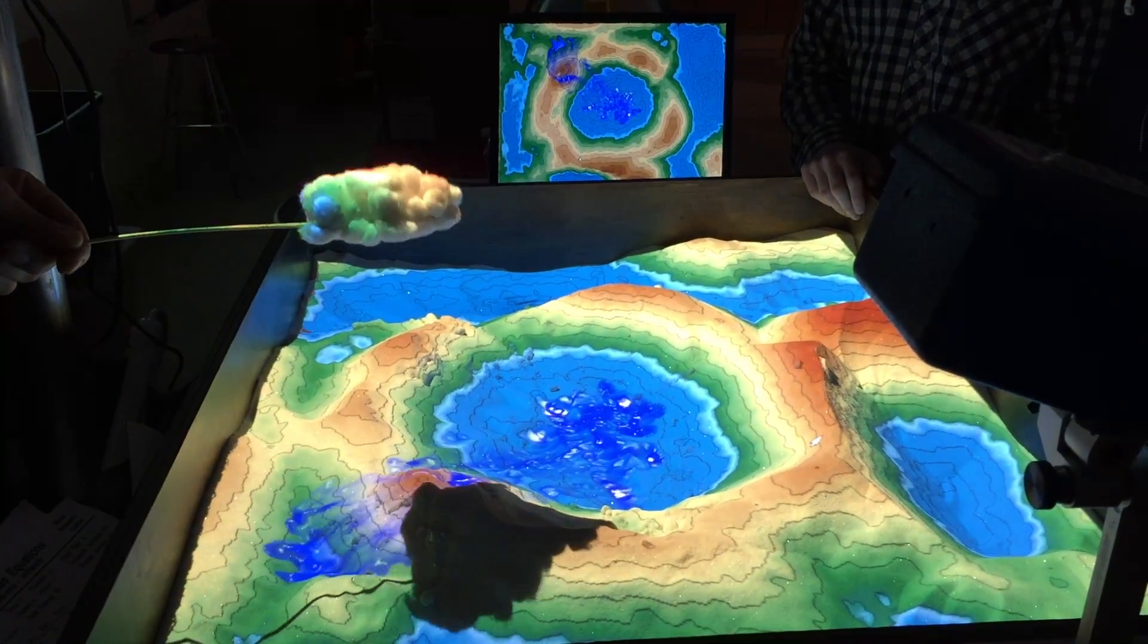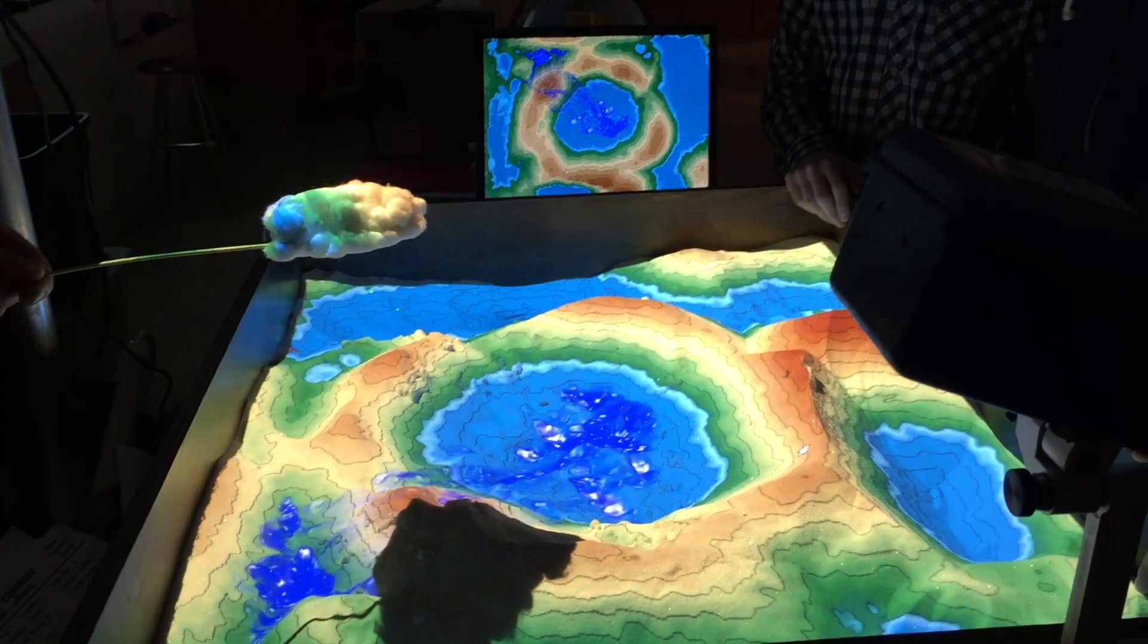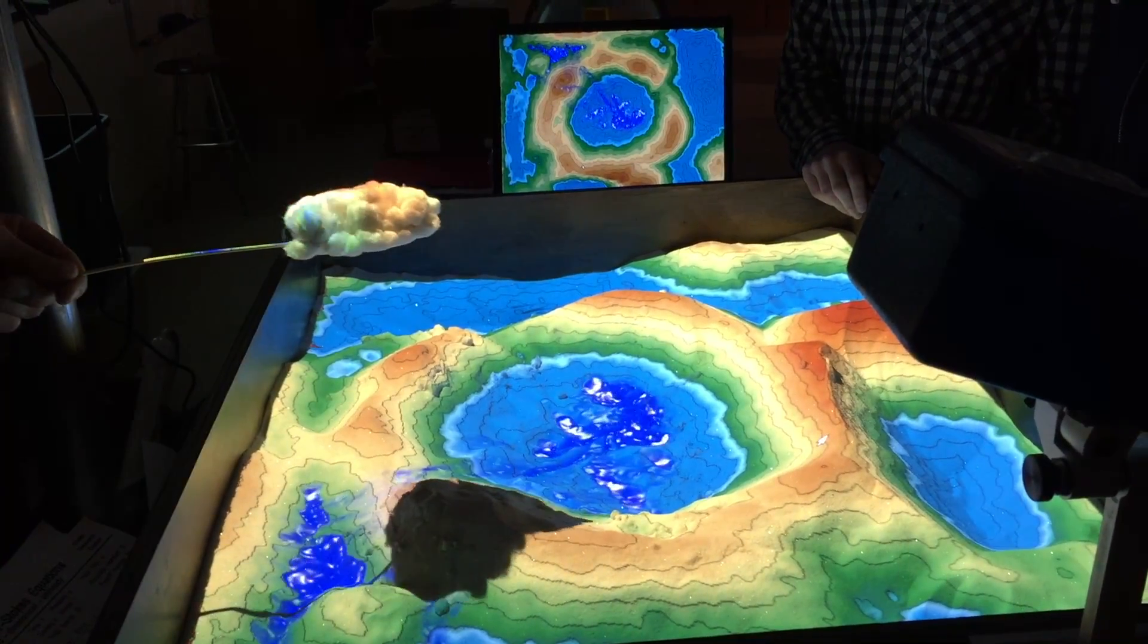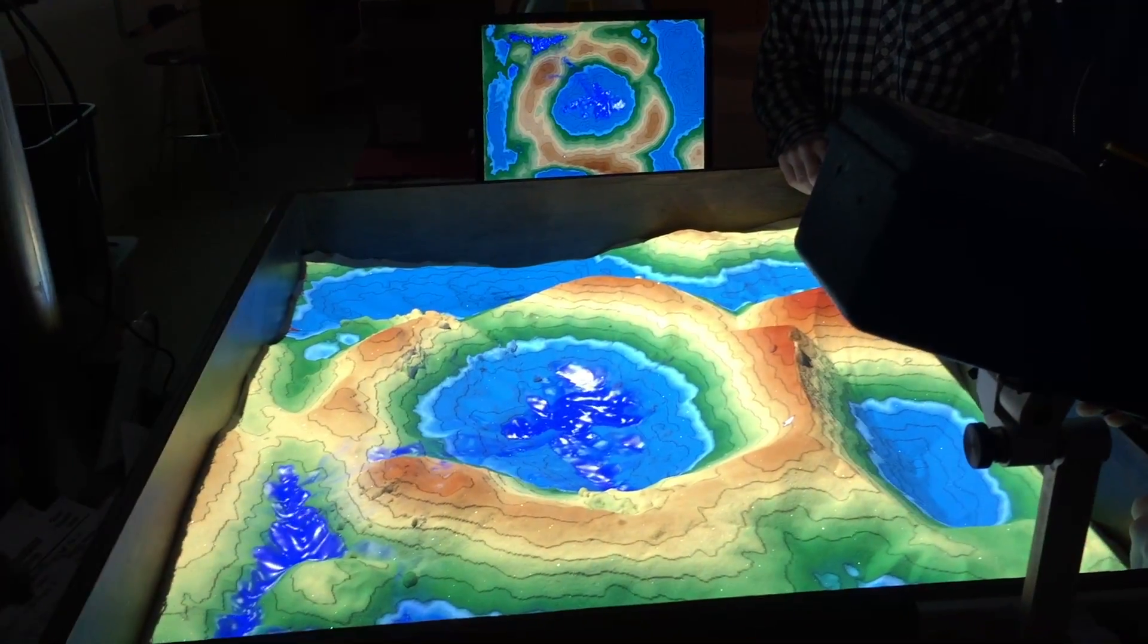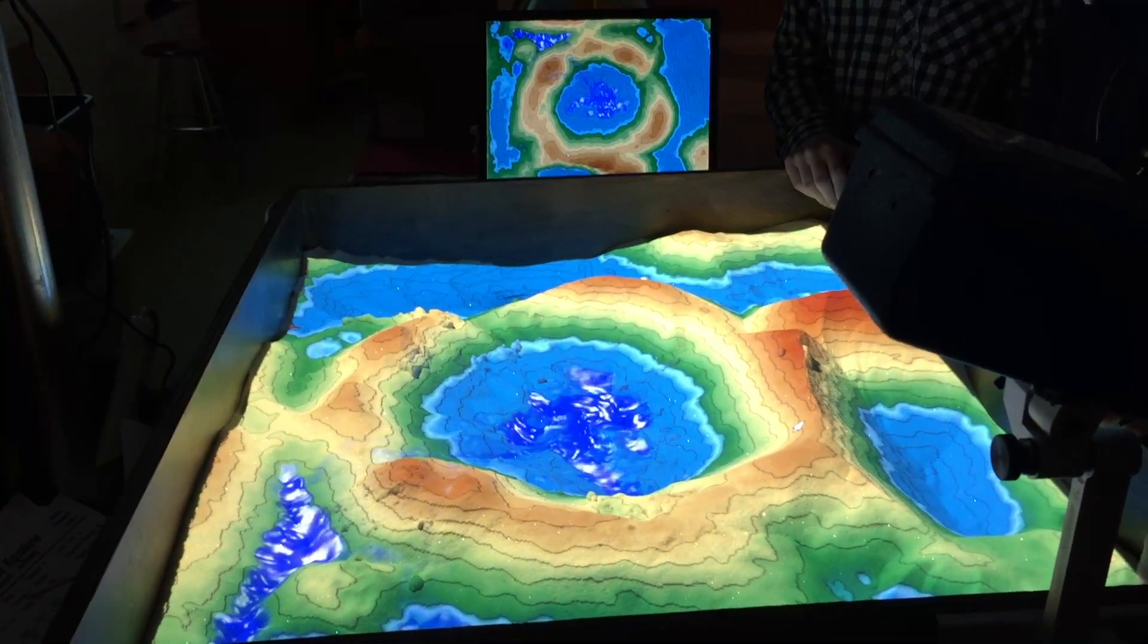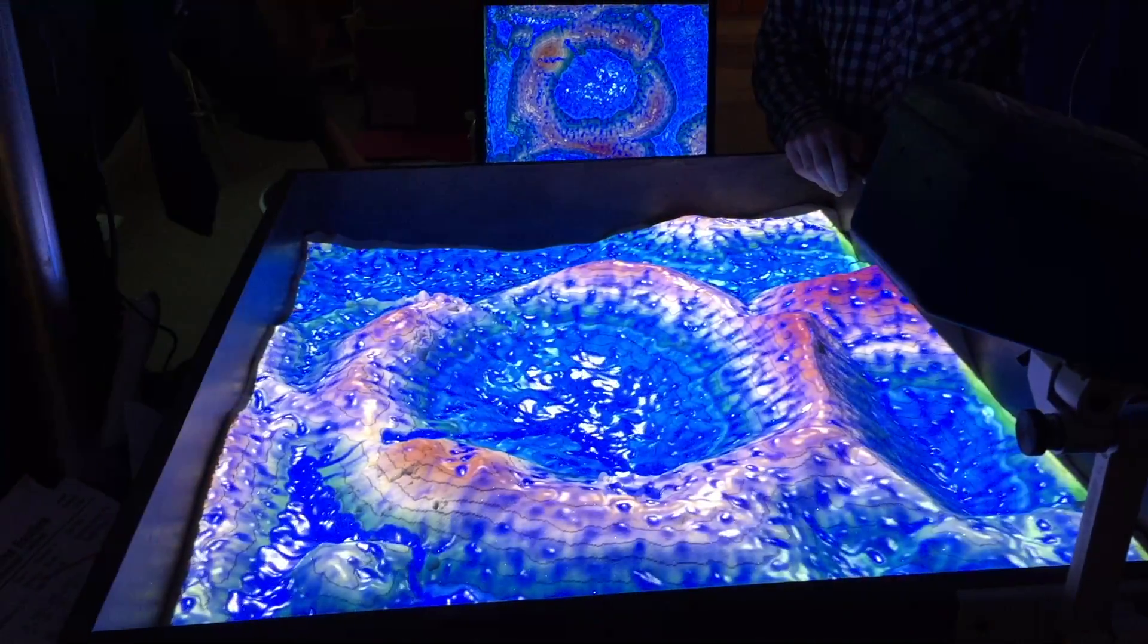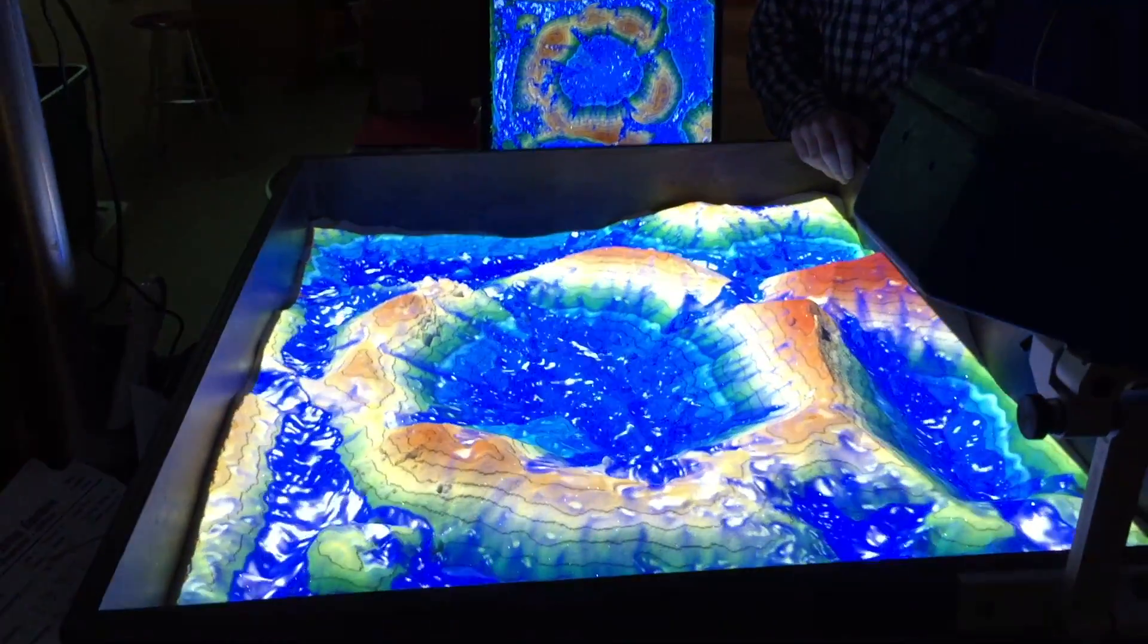So it simulates rain on the surface below that. So if you're teaching about watersheds, you can really show visually how water that falls on one side of a continental divide goes to the Atlantic Ocean and water that falls on the other side goes to the Pacific Ocean. I can flood the whole box here, fill up the lake, make a global flood.